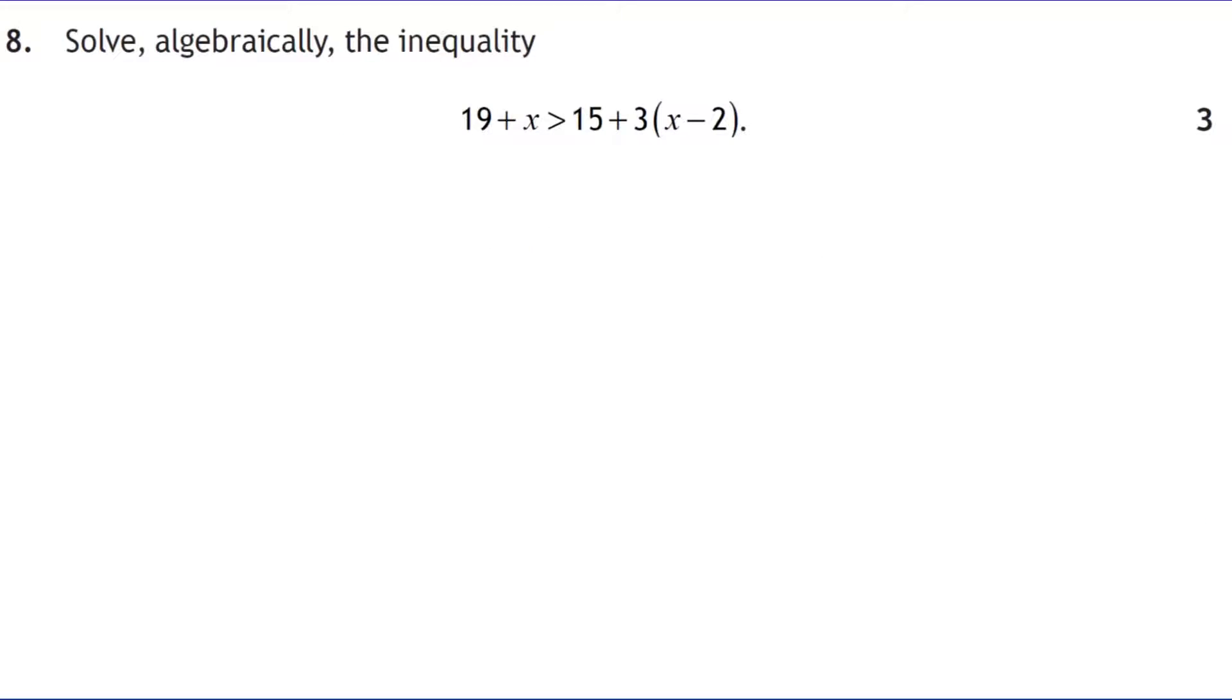Question 8. Solve algebraically. We've got an inequality here. We're going to multiply out the bracket first. 15 plus 3x minus 6. We're then going to collect like terms on the right hand side. So it's 3x. 15 take away 6 is positive 9. And then we're just going to start the balancing process. There are loads of different ways to do this. I'm going to take away 19 from both sides first. And I get 3x take away 10. I'm going to take away 3x, which gives me a negative value.